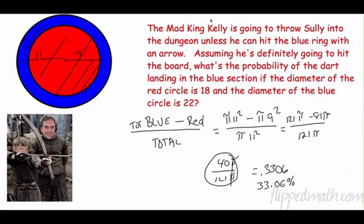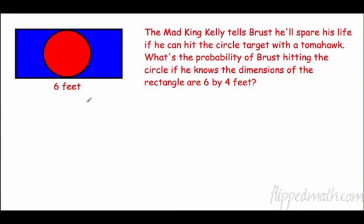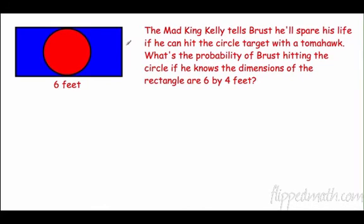When finding geometric probability, if you need to exclude part of an area, you subtract it. The mad king Kelly tells Bruss he'll spare his life if he hits the circle target with a tomahawk. We need to find the probability of hitting the circle given a rectangle with dimensions six by four.